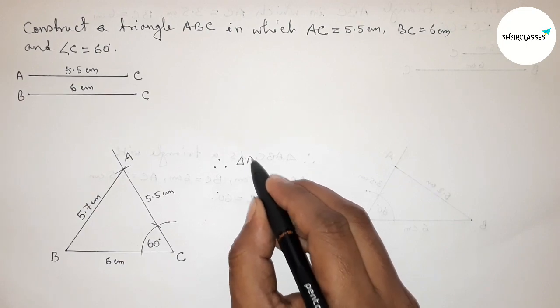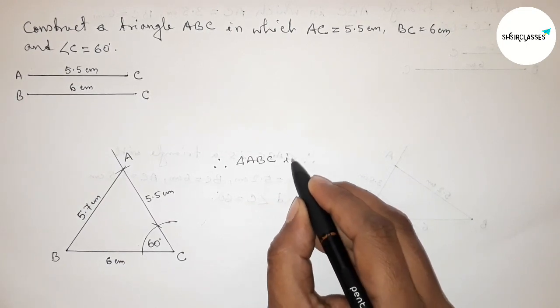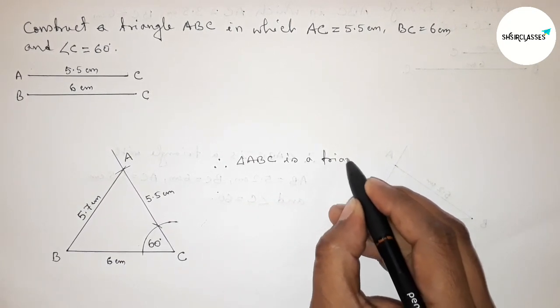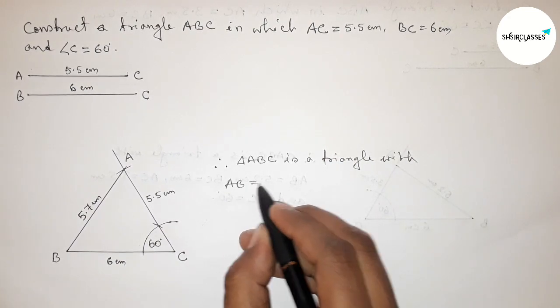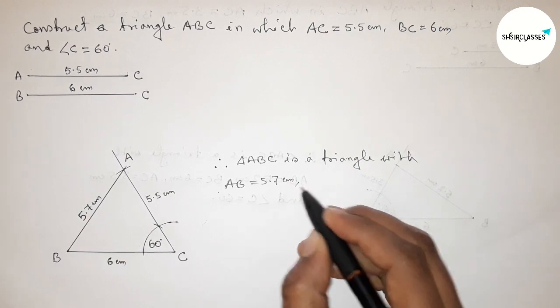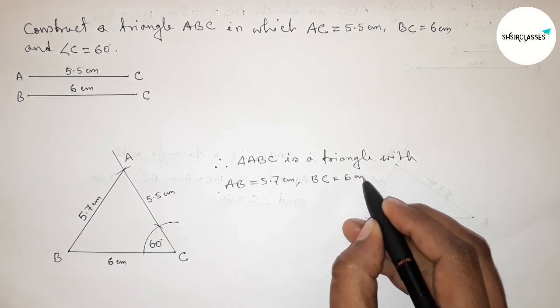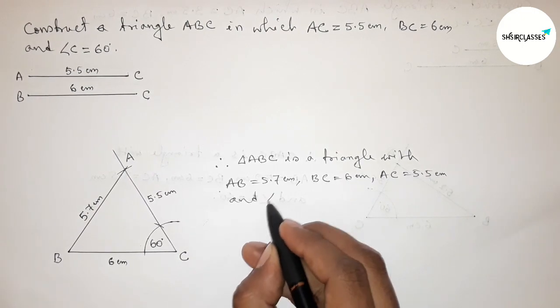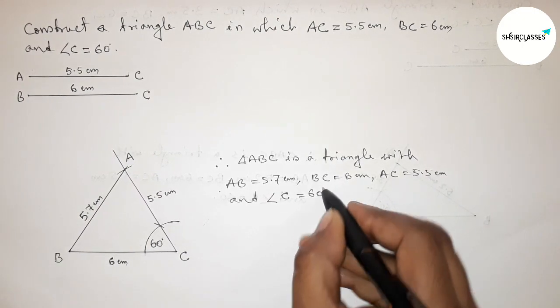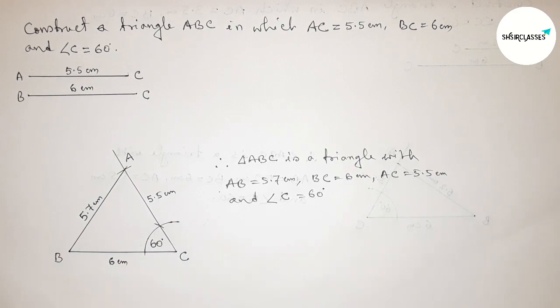Therefore, triangle ABC is a triangle with the side AB equals 5.7 centimeter, BC equals 6 centimeter, AC equals 5.5 centimeter, and angle C equals 60 degrees. So that's all, thanks for watching. If this video is helpful to you then please share it with your friend.